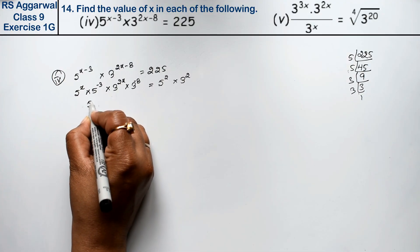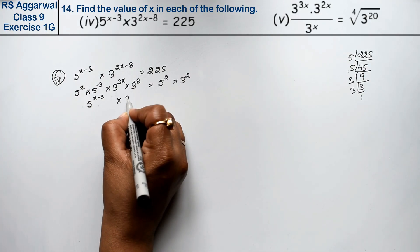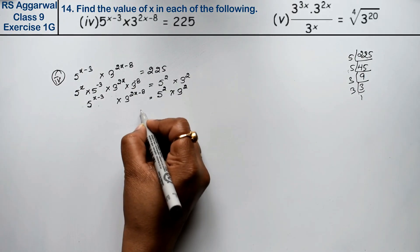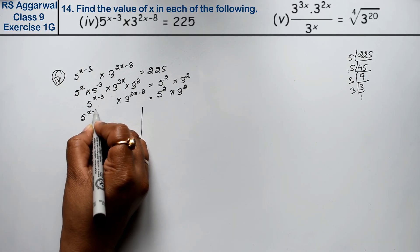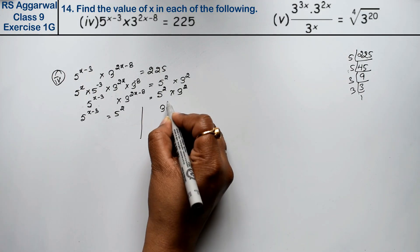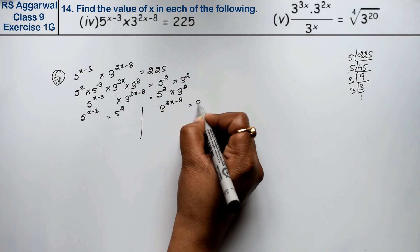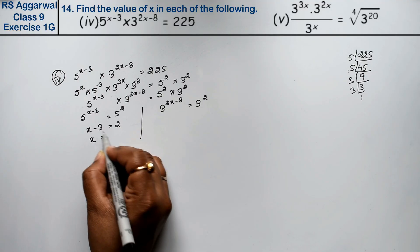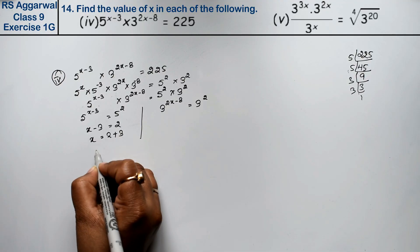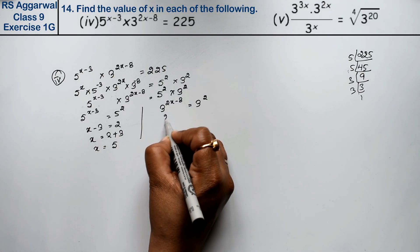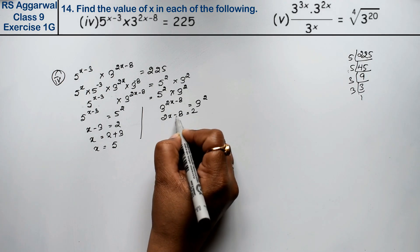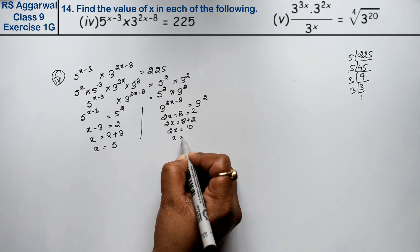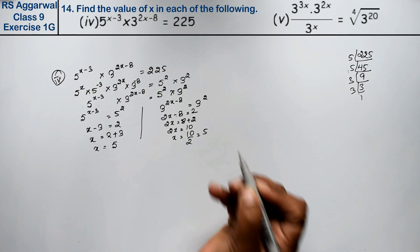Equating the powers of 5 and 3 separately: for base 5, x − 3 = 2, so x = 2 + 3 = 5. For base 3, 2x − 8 = 2, so 2x = 8 + 2 = 10, giving x = 10 ÷ 2 = 5. Both equations give x = 5 as the answer.